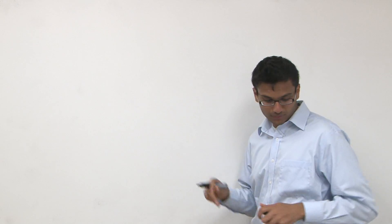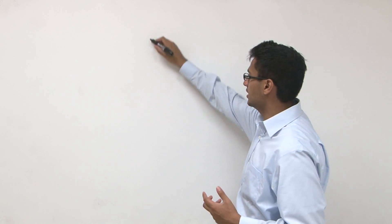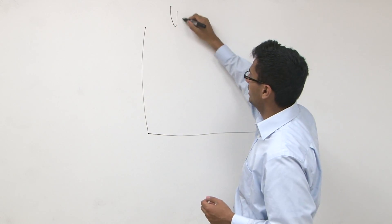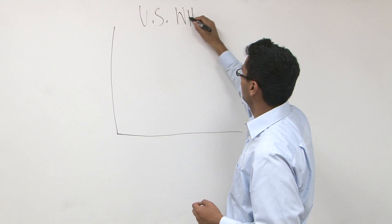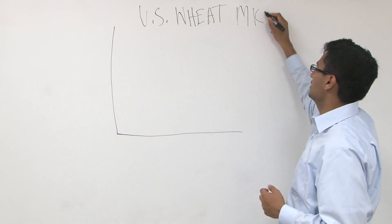Before I jump into any of the new stuff in perfect competition, let me recap real quick with the homework question. The homework question from last class was: draw me a graph of perfect competition of a market and then show me a firm. So I'm going to do just that on the board. The example we used from last class was the US wheat market. So this is the US wheat market — let me go ahead and label it. This is in perfect competition; MKT is going to stand for market.